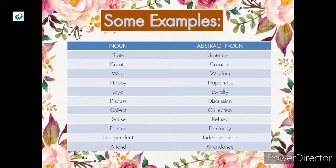HAPPY — HAPPINESS: we have replaced Y with I and added NESS. LOYAL — LOYALTY, adding TY. DISCUSS — DISCUSSION, adding ION. COLLECT — COLLECTION, adding ION. REFUSE — REFUSAL: we have replaced E and added AL. ELECTRIC — ELECTRICITY.